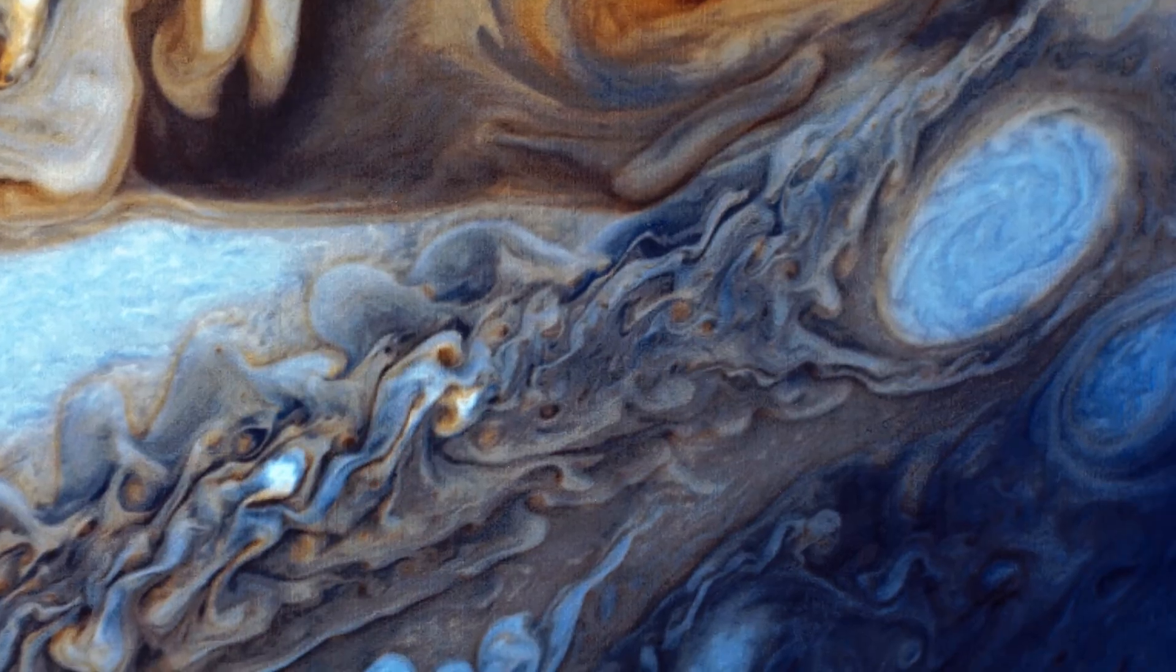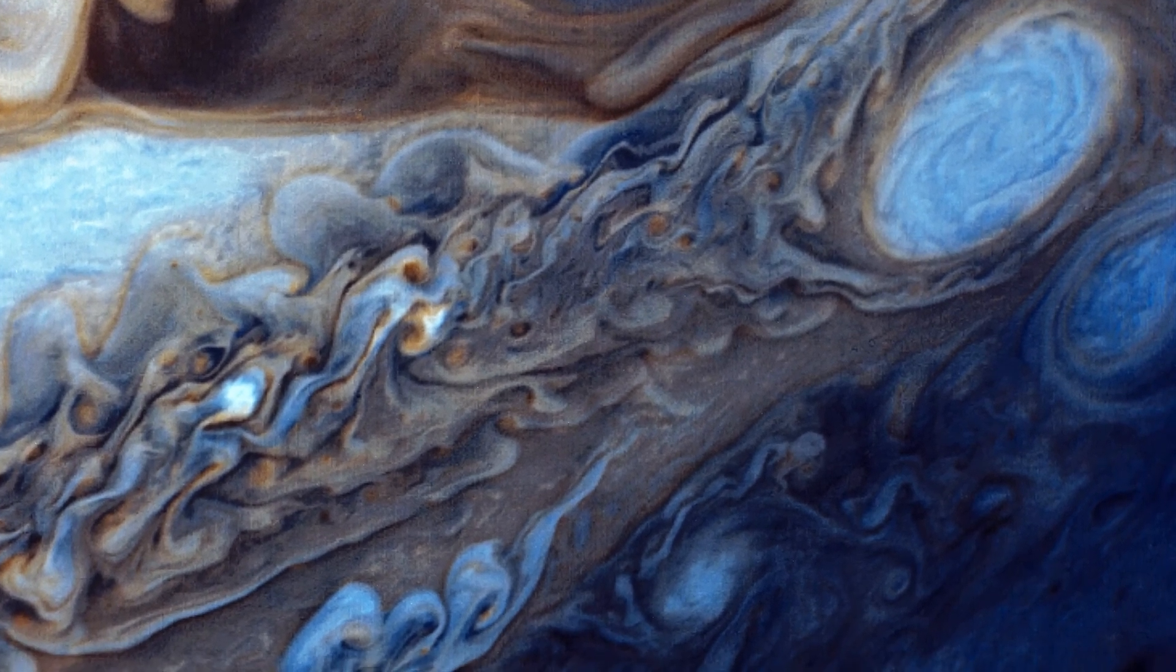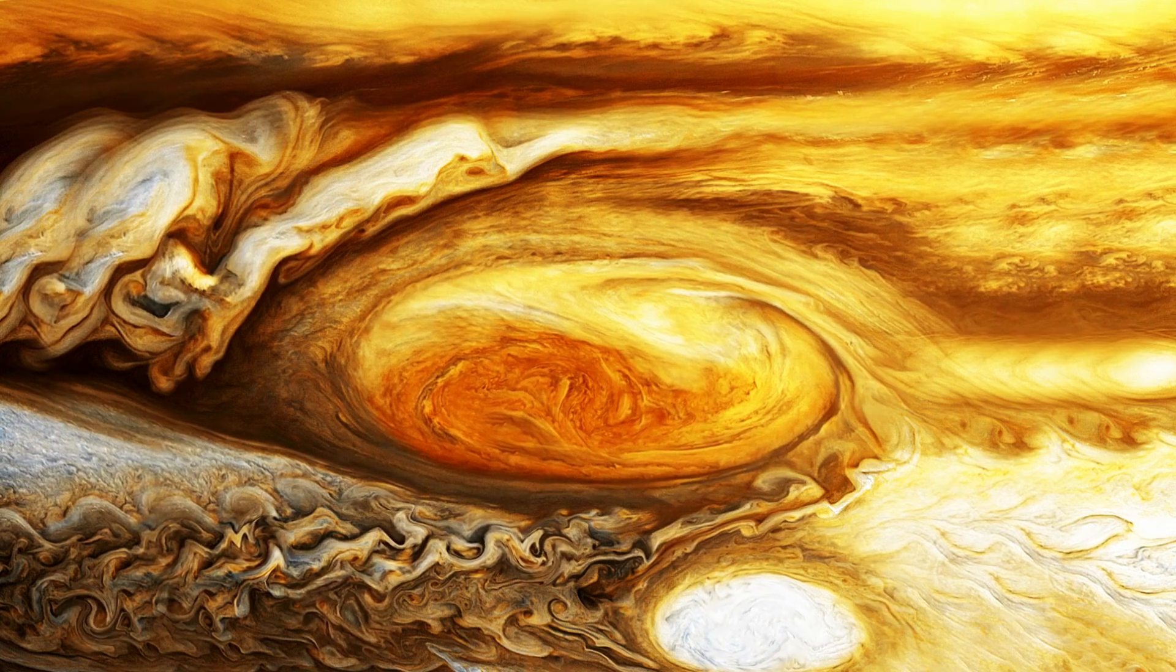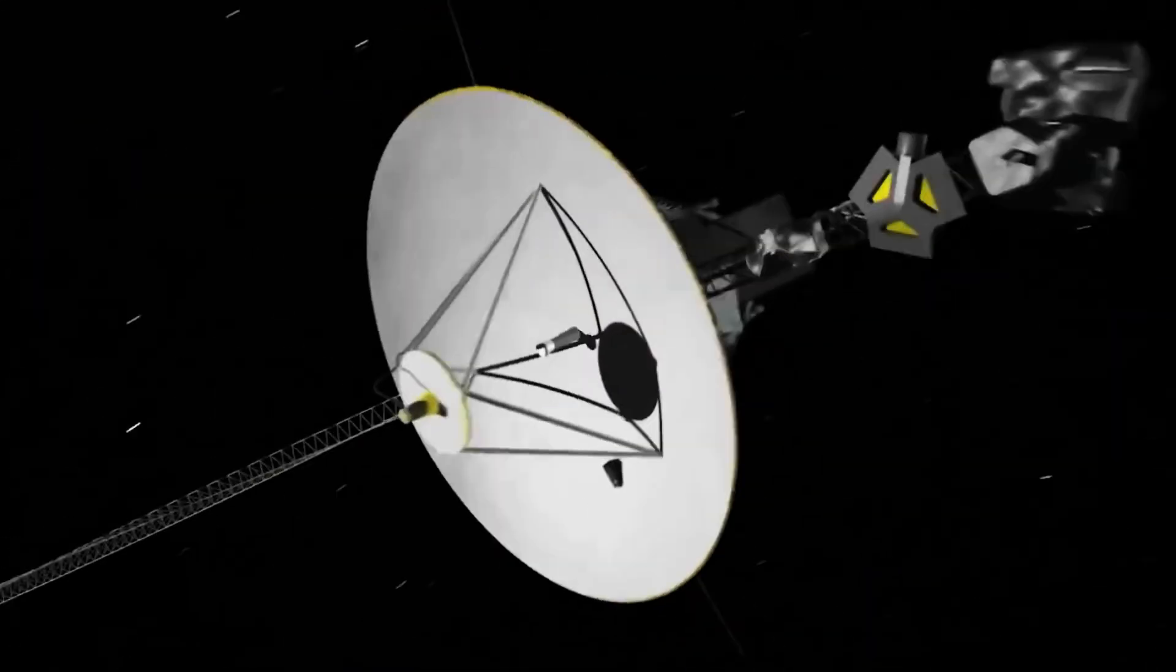Scientists also got their first up-close look at Jupiter's great red spot, a massive storm larger than Earth. But Jupiter was only the first stop. Using the gas giant's gravity as a slingshot, both probes accelerated toward their next destination, Saturn.